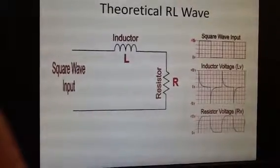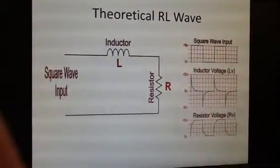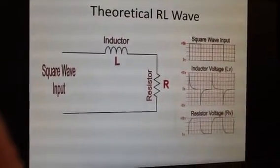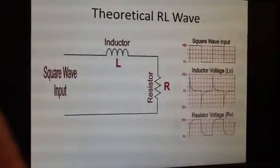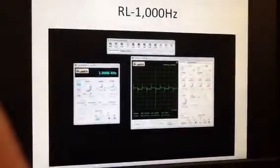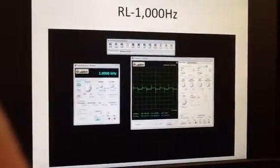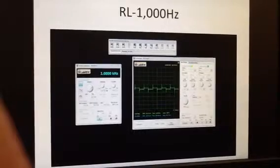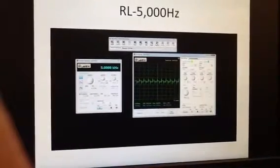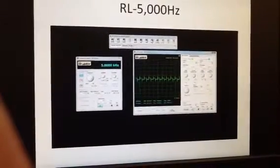So we'll go into this. This is what theoretically our RL wave was supposed to look like, and as you can see, we got something very similar. Starting at, this was at 1,000 Hertz, and then we stepped up to 5,000 Hertz. Still very similar waveform.